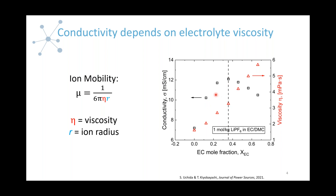Why does this happen? It is due to the competing effect of the solvent dielectric constant. When viscosity drops, the solvent dielectric constant drops as well, which acts to reduce conductivity. Beyond a certain point, the drop in the dielectric constant is too great and conductivity starts to decrease. When making such formulations, it is important to consider these competing effects of viscosity and other factors to maximize conductivity.